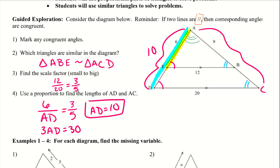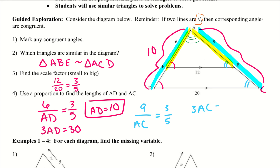Then we can do the same thing with the other side. I can do 9 over AC — we have our smaller triangle and then the larger triangle. So 9 over AC equals 3 over 5 — that's our scale factor, it has to equal that. So 3·AC equals 45. Divide by 3, and AC equals 15.